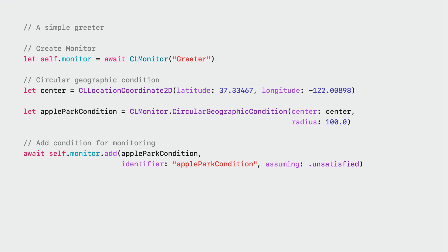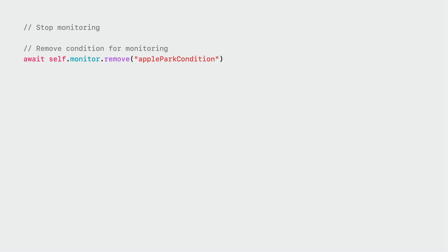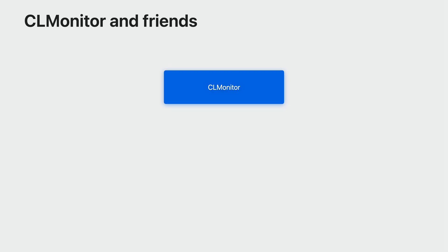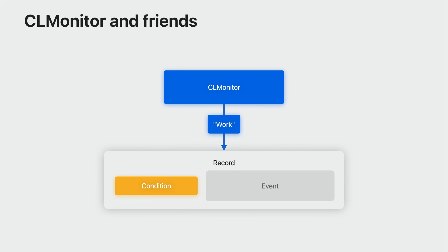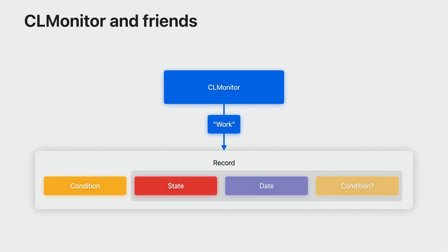To remove a condition from monitoring, you can call the remove method with the identifier that was passed when the condition was added. Removing a condition removes the corresponding record as well. Now that you know what a condition is, what types are supported, and how to add or remove one from monitoring, let's take a detailed look at the contents of a record. When you add a condition for monitoring, Core Location creates a record and adds the condition in that record. In addition to the condition, a record contains another object called event.